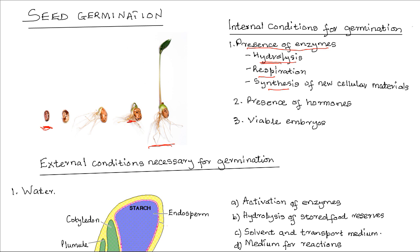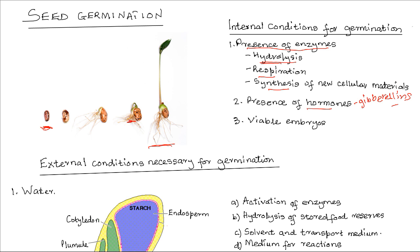Another internal factor necessary for germination is the presence of hormones. Various hormones promote growth and neutralize the effect of inhibitors — this includes gibberellins, which promote growth and neutralize the effect of chemical inhibitors. There must also be viable embryos, meaning the embryos must be living to continue developing into a plant; if the embryo is dead, the seed will not germinate.